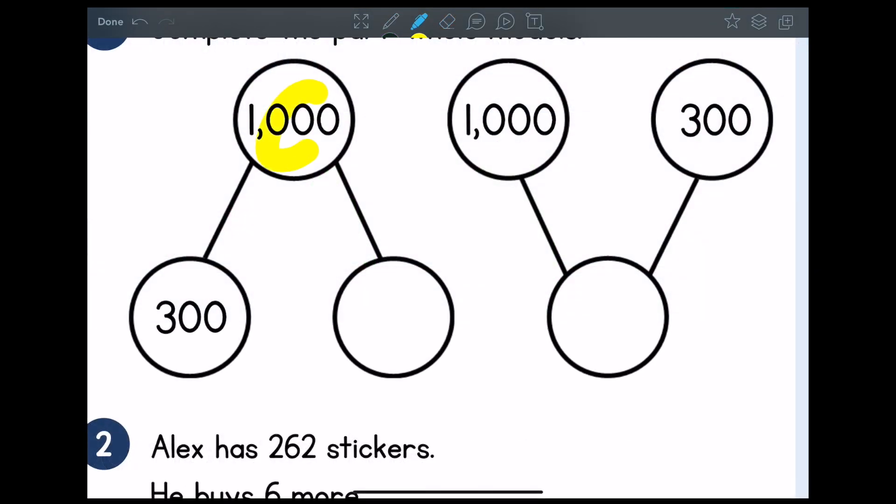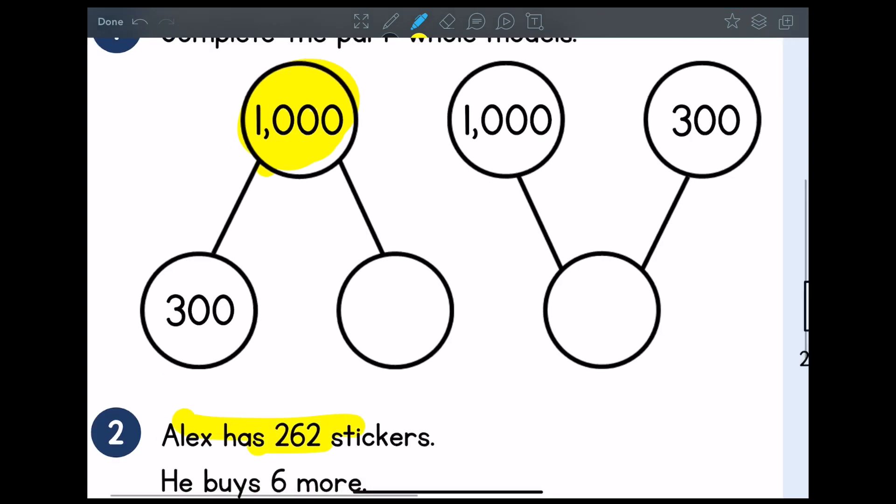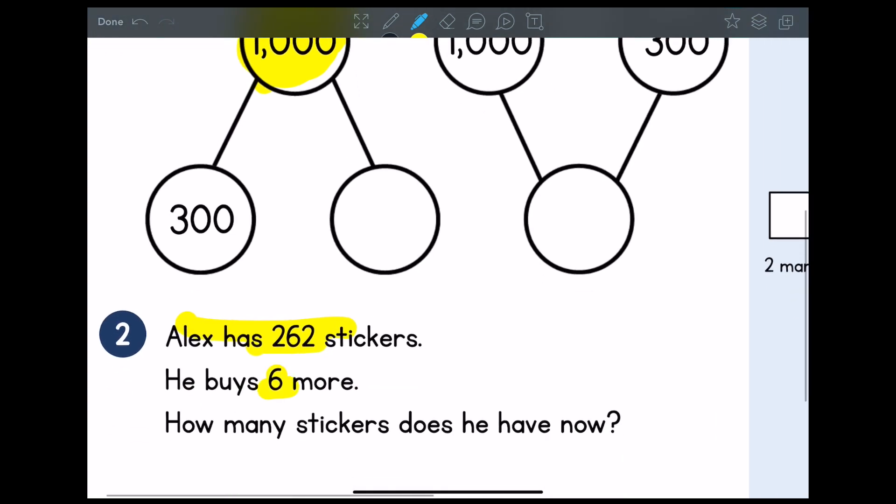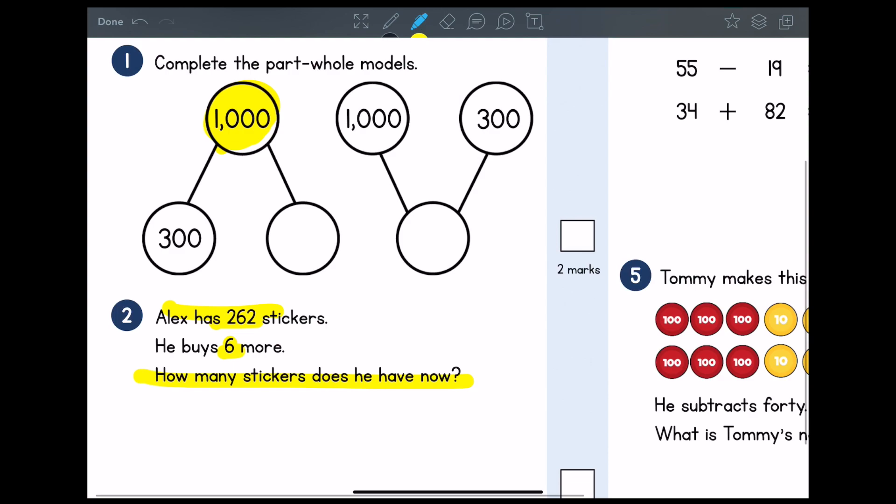Casting our attention back to the toolbar at the top, the second option we have is a highlighter tool. This is important as it allows you to add color without covering up the text below.